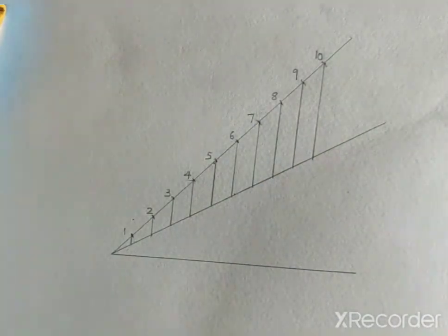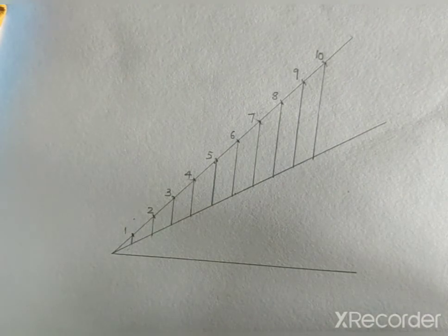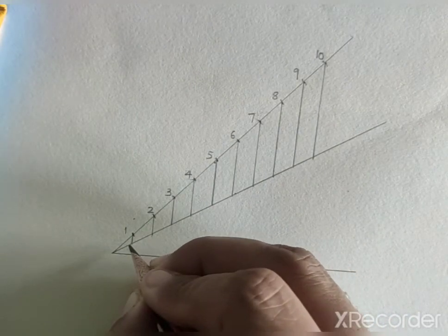So in this way, we have drawn all the perpendiculars on 30 degree line. So we will number them.